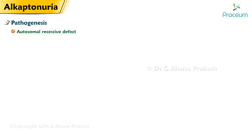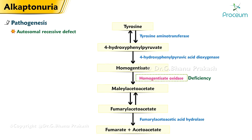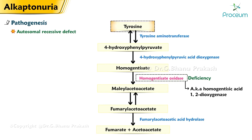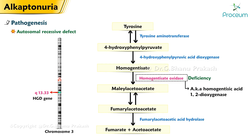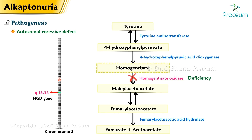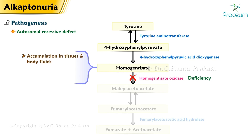Pathogenesis: It's an autosomal recessive defect and occurs due to deficiency of homogentisate oxidase (homogentisic acid 1,2-dioxygenase), the third enzyme in tyrosine degradation. Mutation in the HGD gene is responsible for this condition. Deficiency of homogentisate oxidase prevents conversion of homogentisate to maleylacetoacetate.